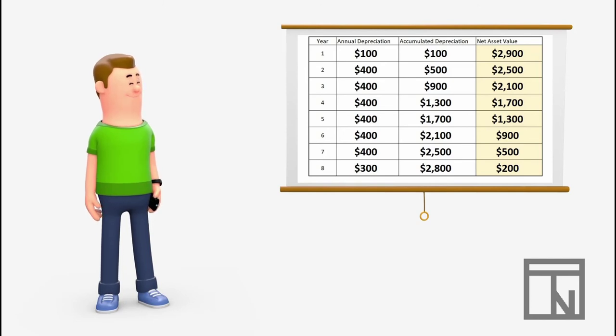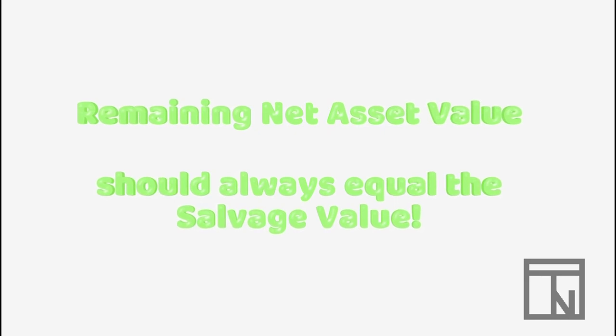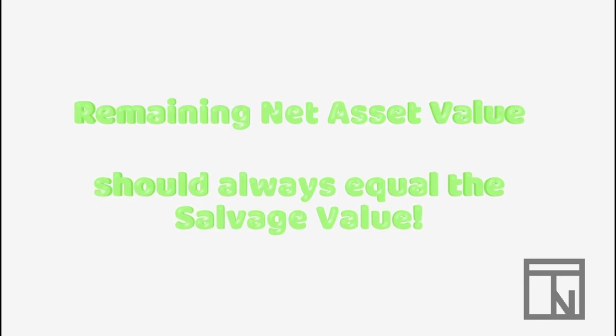Now that Bob is finished, you can see that the remaining net value after year 8 is $200. You may recall that this is the exact amount of the salvage value of the equipment. If you have done the schedule right,